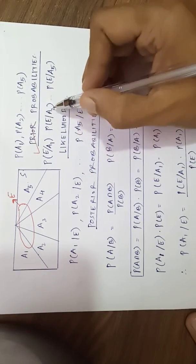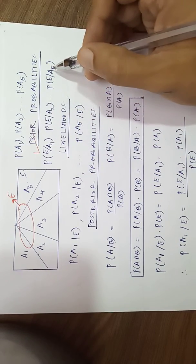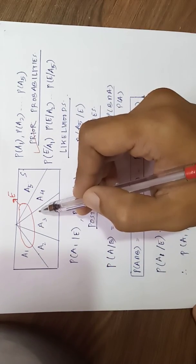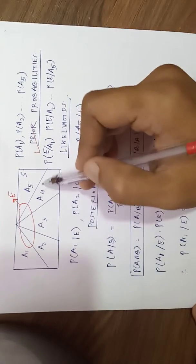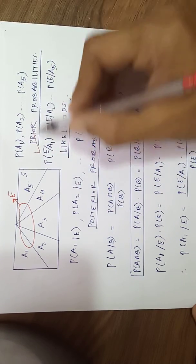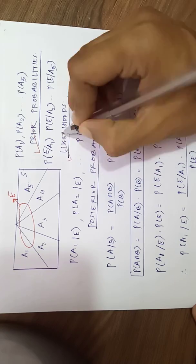Probability of e given a1, e given a2, e given a5. Now this is e. What is e? e can have a sample space. These things we have also seen in total probability theorem. So e given a1, e given a2, this type of probabilities is called likelihoods.